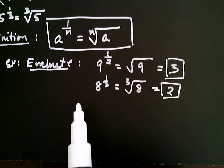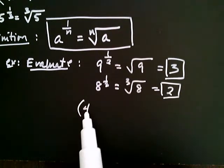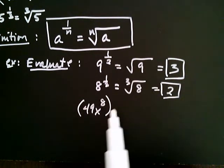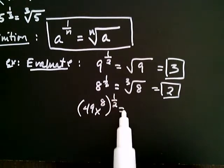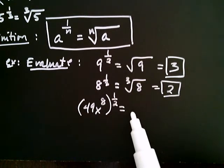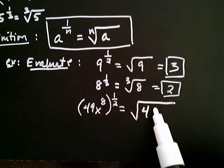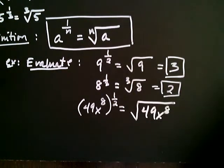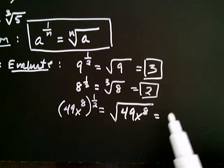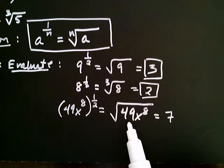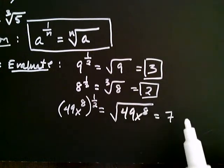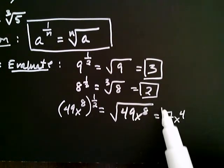And then one more — let's try something a little more complicated. How about 49x to the eighth, raised to the positive one half? That's going to be the square root of 49x to the eighth. So that's going to be seven — since seven is the square root of 49 — and then I take the eight and divide it by two, which is the index. Eight divided by two is four, and so I get seven x to the fourth.